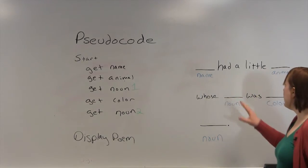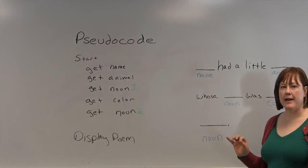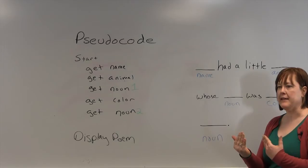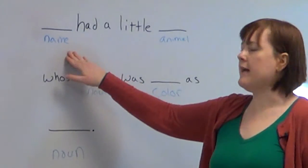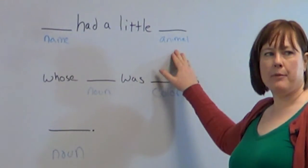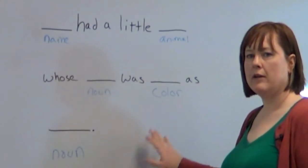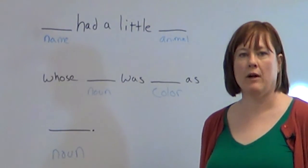When you play Mad Libs you take words out and ask the person sitting across from you who can't see the paper to give you an answer. So you'd say give me a name, give me an animal, give me a noun, give me a color, give me a noun. Now we're going to program this and it works out really well for programming.